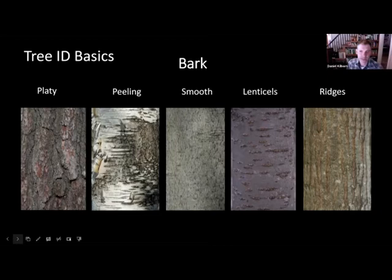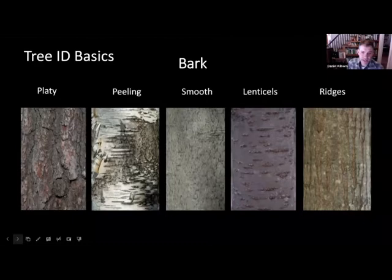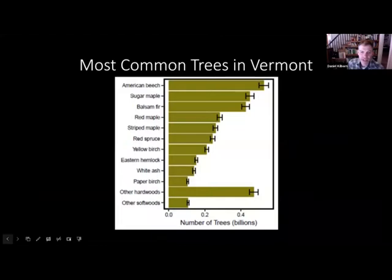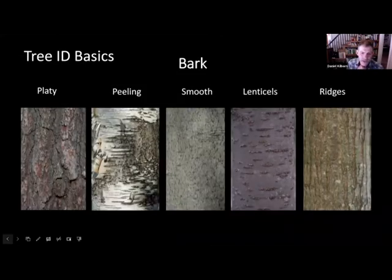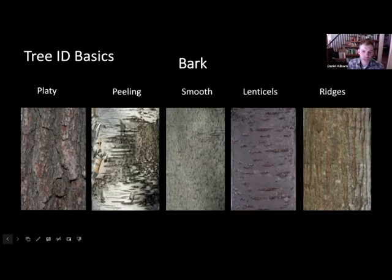Bark can have lots of different characteristics. It might be platy or peeling, very smooth, or it can have lenticels — little pockets used for gas exchange. It can have vertical ridges or fissures and can also be different colors. We'll give you a shot of bark for each tree we talk about today. It's important to remember there are also differences in bark between young trees and mature trees of the same species. Bark could look very different on young trees than on mature trees.